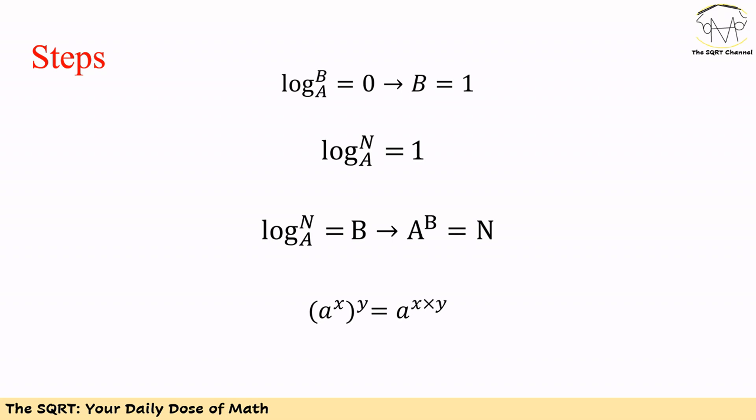Now let's summarize the steps that we took. If log_A(B) equals 0, then B equals 1. If log_A(N) equals 1, then N equals the base A. If log_A(N) equals B, then A^B equals N. And at the end, we use the trick that (A^x)^y actually equals A^(x×y).